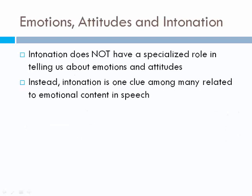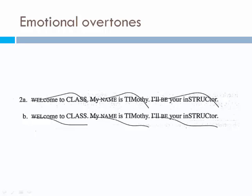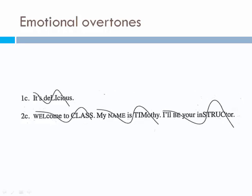Emotions, attitudes, and intonation. Intonation does not have a specialized role alone in telling us about emotions and attitudes — we cannot say intonation alone does the job. Instead, intonation is one clue among many related to emotional content, like grammar construction, vocabulary choice, and body language. Emotional overtones example: 'Welcome to class. My name is Timothy. I'll be your instructor.' The first version is more excited — more emotional overtones.